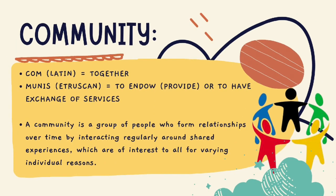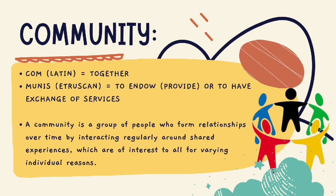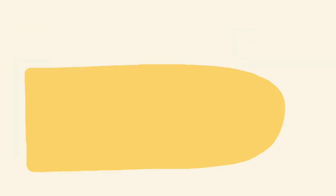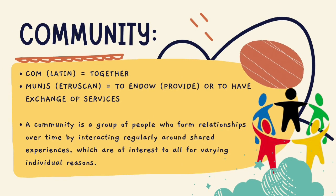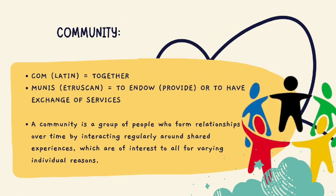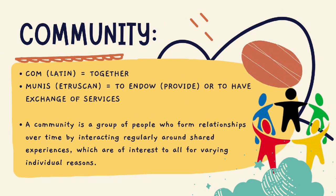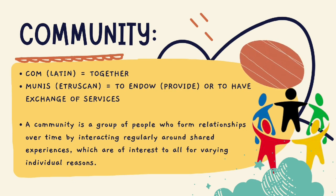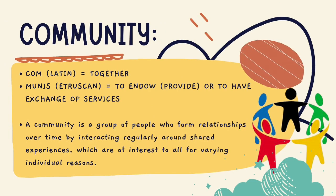The second term we need to understand is the word community. Community comes from the Latin word 'com' and the Etruscan word 'munis.' 'Com' in Latin means 'together' in English, and 'munis' means to endow or to have exchange of services. So while many understand community to be a group of people living in the same place, the correct definition is that a community is a collective body of individuals identified by common characteristics, including geography, but not limited to it.